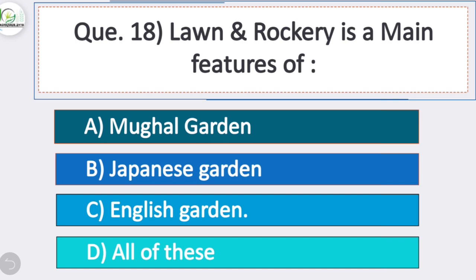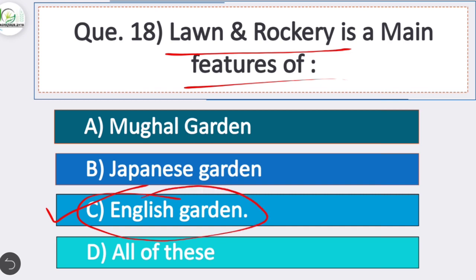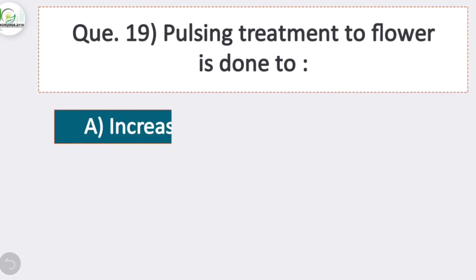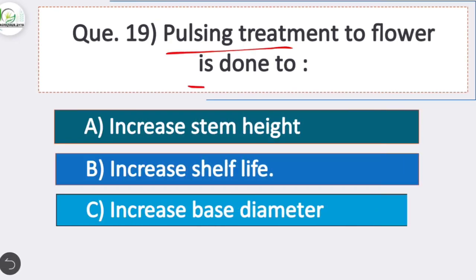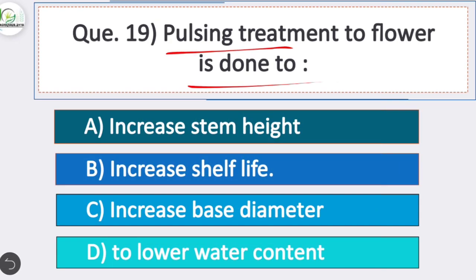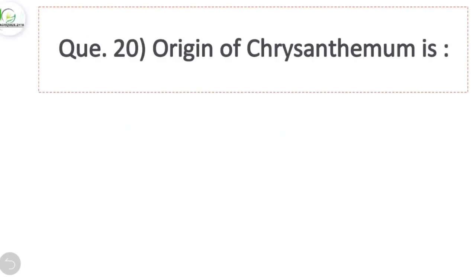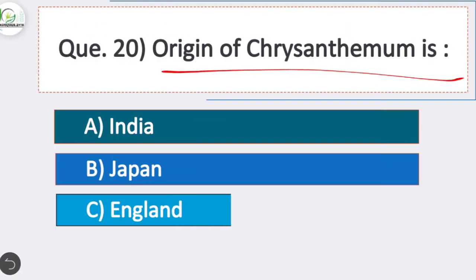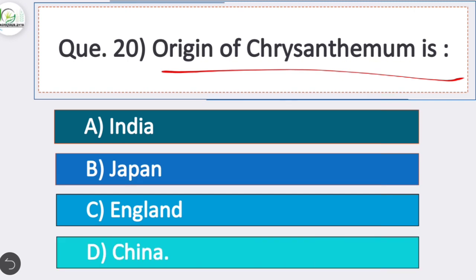Question 18: Lawn and rockery are the main features of English Garden. Question 19: Pulsing treatment to flowers is done to increase shelf life. Question 20: Origin of Chrysanthemum is China.